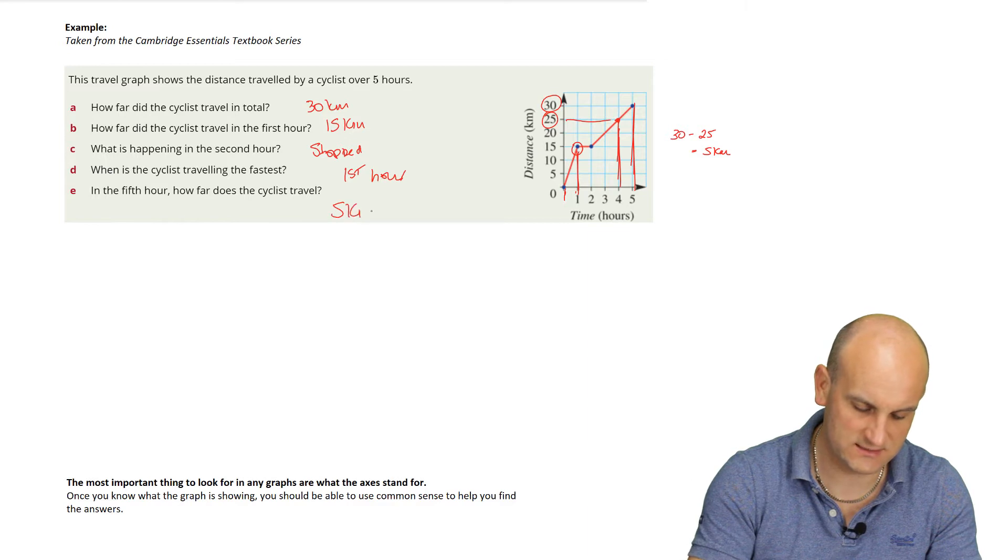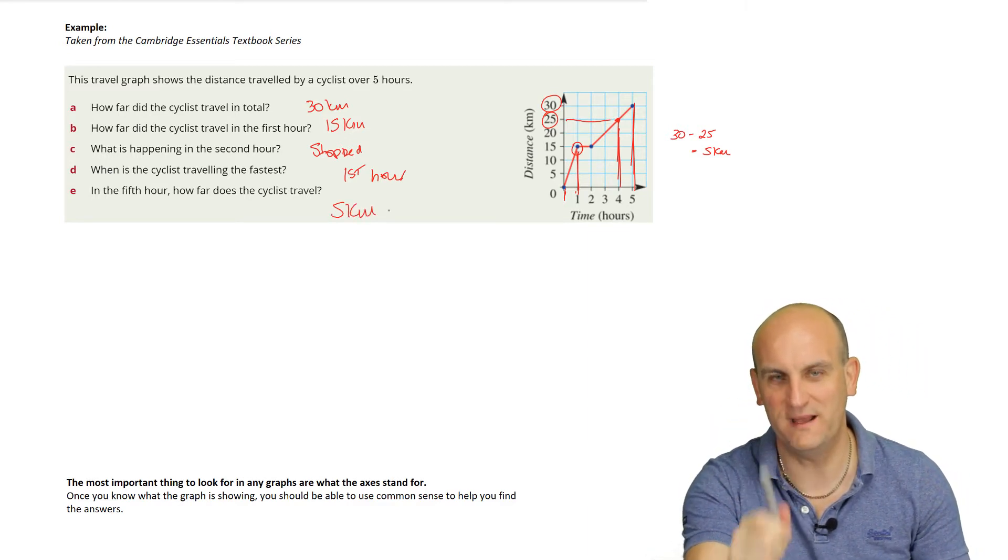And in the fifth hour, how far does the cyclist travel? Well, now this is the only trick. So zooming in, we're looking for the fifth hour. So that's between hour number four and hour number five. So we have to look at this point here and say, well, how far was he on the fourth hour? He was at 25 kilometres. How far was he on the fifth hour? He was 30 kilometres. And so 30 minus 25 means in that fifth hour, he must have travelled five kilometres. And they say maths is hard. Ha! I laugh at this.